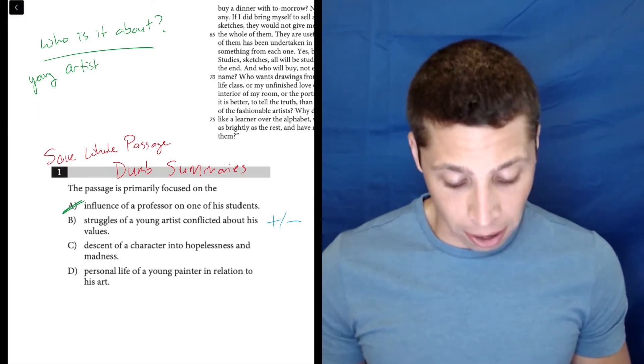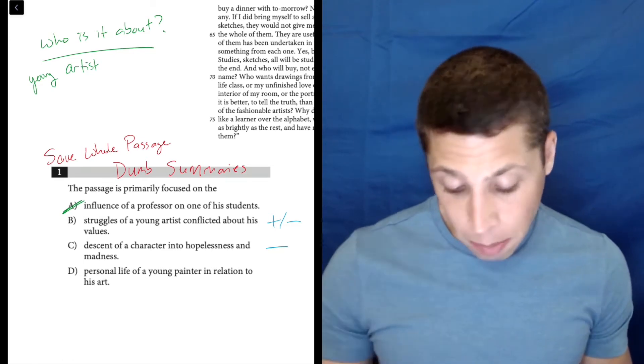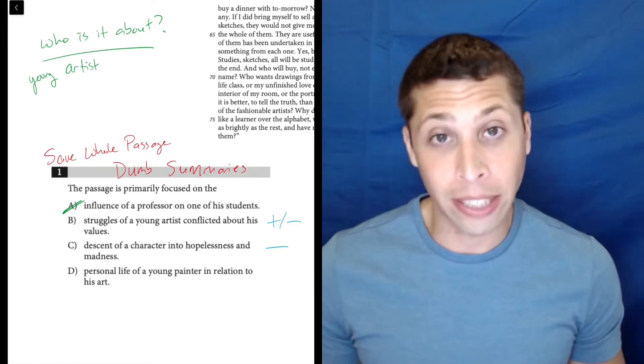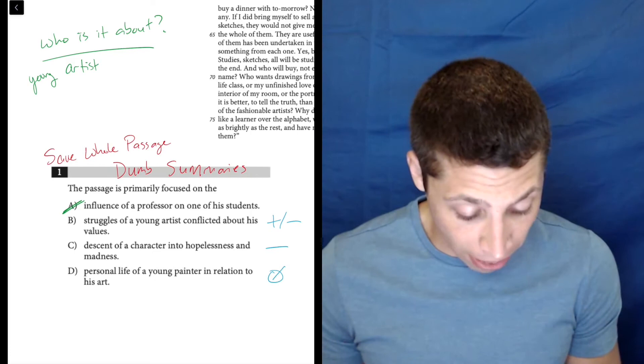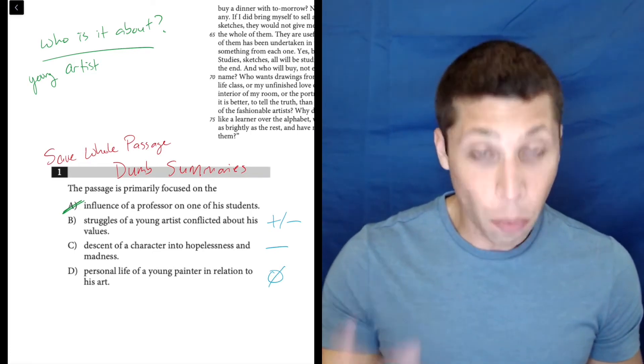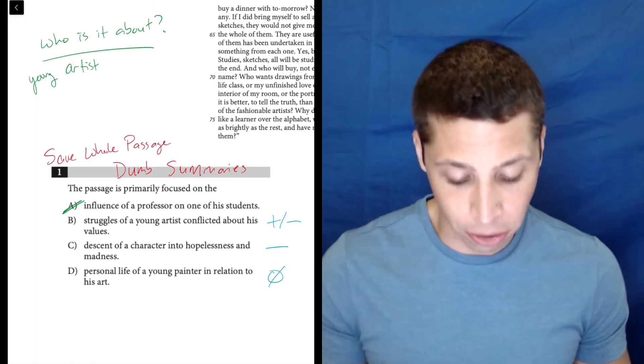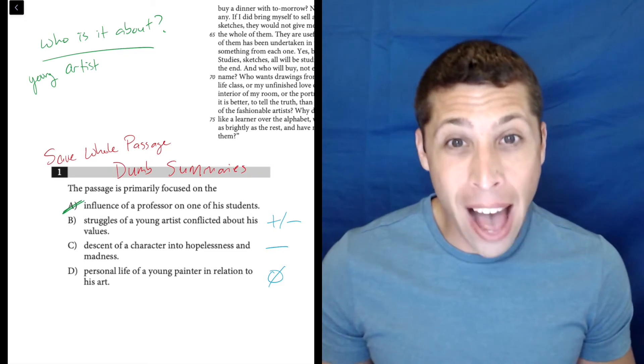C: Descent of a character into hopelessness and madness. That's very negative. And D: Personal life of a young painter in relation to his art. That's actually pretty neutral, and honestly I would normally like that answer choice. It's very weak. The one I would definitely not like is choice C. These are incredibly strong words.